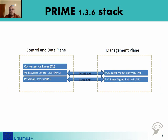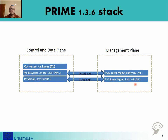Here you can see the PRIME 1.3.6 stack. We can find three layers: the Convergence Layer, called CL; the Media Access Control layer, called MAC; and the Physical layer, called PHY. The Convergence Layer is responsible for adopting specific services from upper layers. The MAC layer is managed by the MAC Layer Management Entity, MLME, and the Physical layer is managed by the PHY Layer Management Entity, PLME. Those two create the so-called management plane.